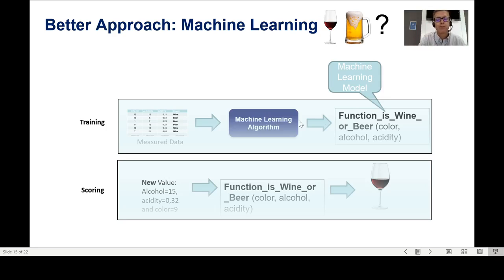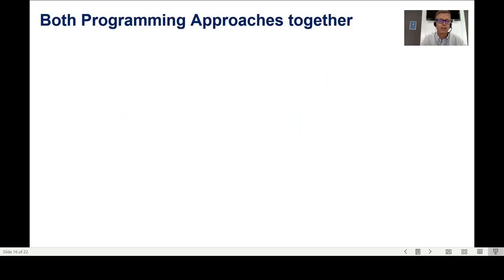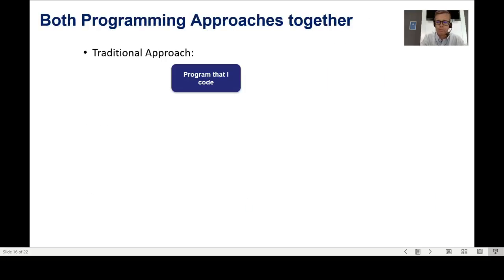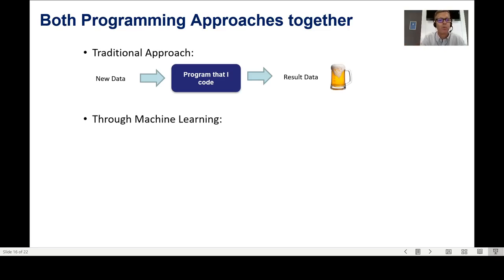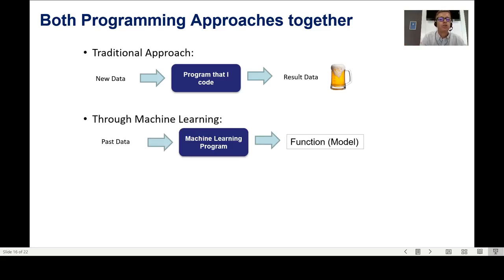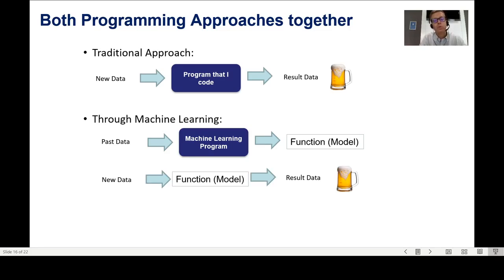Let me put both programming approaches together so we understand the difference. In the traditional approach, I need to code a program with the intelligence and business knowledge — in this case about wine or beer — give it new data, and it returns a result based on rules. Through machine learning, I first train my model by giving past data to the algorithm to obtain the function, then I feed new data to that model to obtain the result.